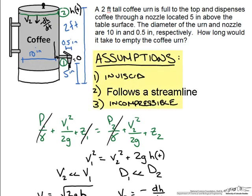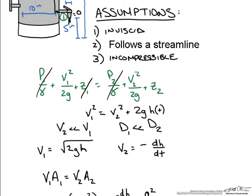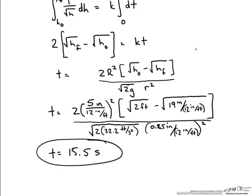So recall for this unsteady state problem we assume that the flow is inviscid, incompressible, and we used a quasi-steady state approximation to get v1 and a continuity equation to get v2. This gave us an expression to calculate the time to go from one height to another in a cylindrical system where we could make these assumptions. In plugging in the values for our coffee urn we got 15.5 seconds.